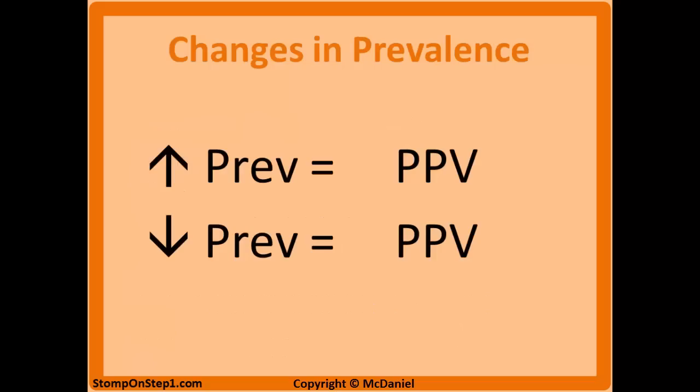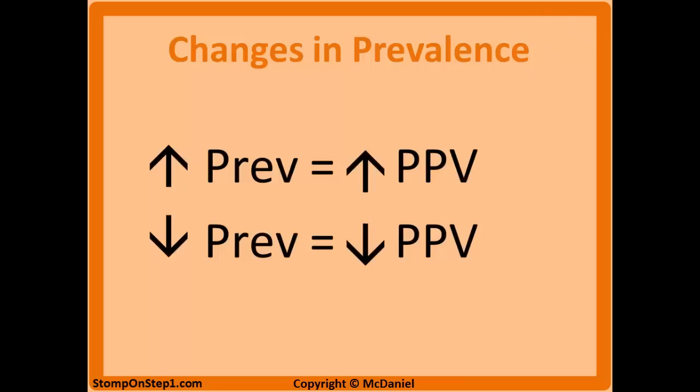It's also important to know how positive predictive value changes in response to changes in prevalence, because unlike sensitivity and specificity, the predictive values change with differences in prevalence. Positive predictive value increases with increases in prevalence and decreases with decreases in prevalence. So it's just directly proportional.